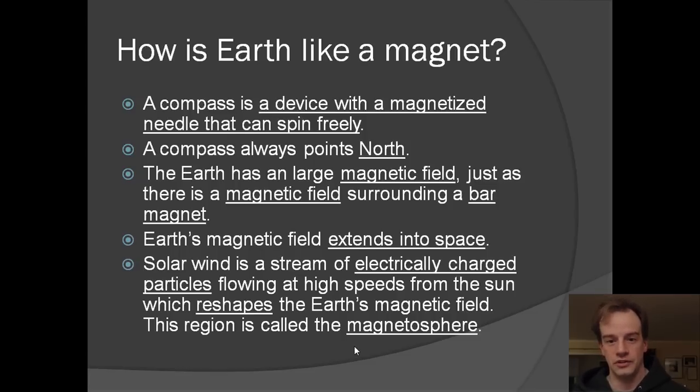And Earth's magnetic field extends into space. And this is a good thing because the solar wind is a stream of electrically charged particles flowing at high speeds from the sun. And this will hit the magnetic field. And the magnetic field, the magnetosphere, will prevent those streaming electrically charged particles from hitting the Earth and killing us.